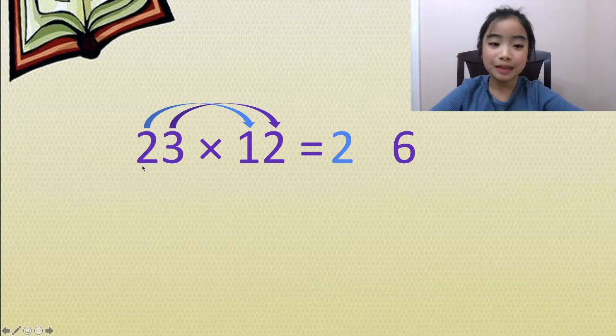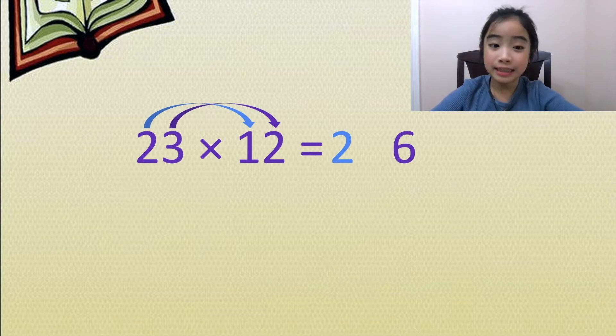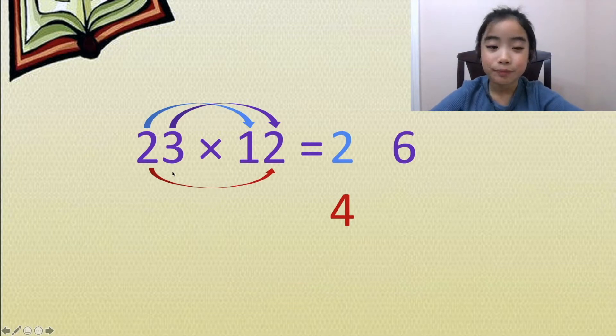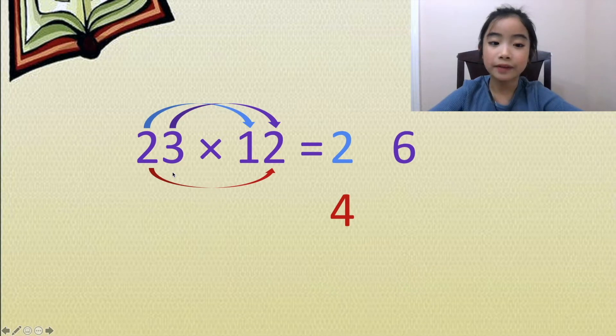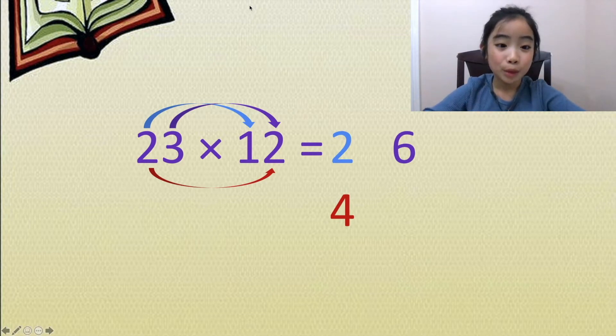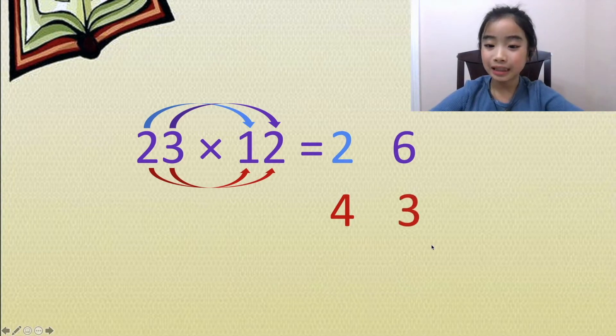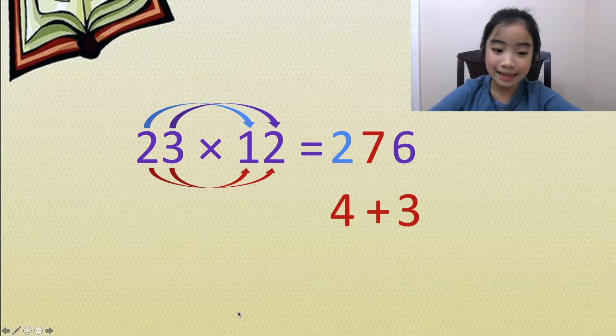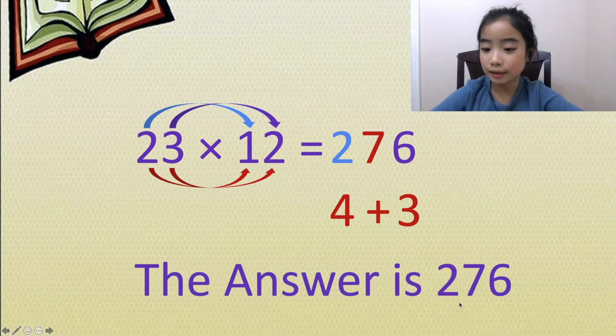First, let's multiply the tens digit of the first number to the ones digit of the second number. We have 2 times 2 equals 4. And lastly, let's multiply the ones digit of the first number to the tens digit of the second number. We have 3 times 1 equals 3. Now let's add it up. 4 plus 3 equals 7. The answer is 276.